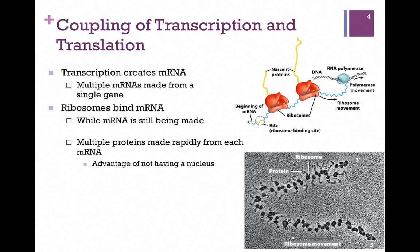And once a ribosome has cleared that ribosome binding site, a second ribosome can bind. This is the advantage of not having a nucleus: you can make multiple proteins rapidly from each message.